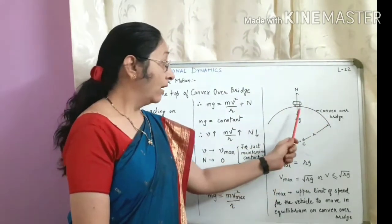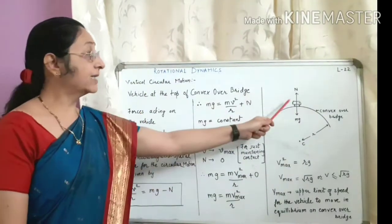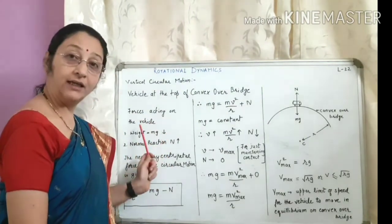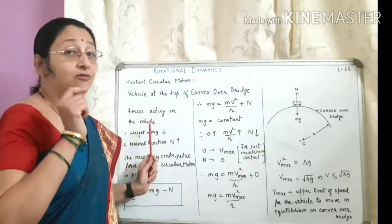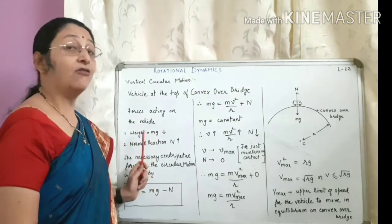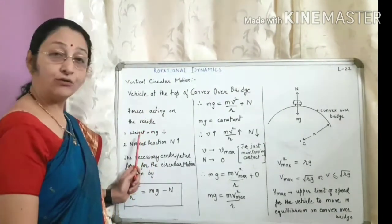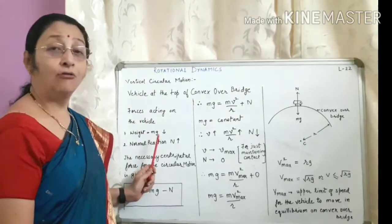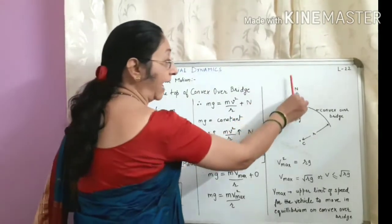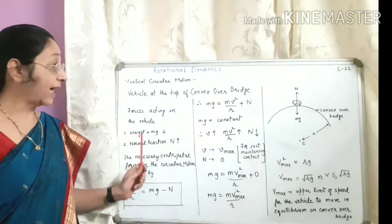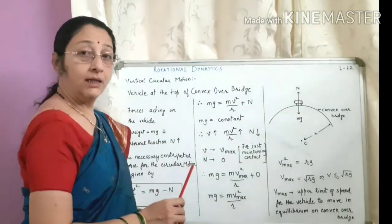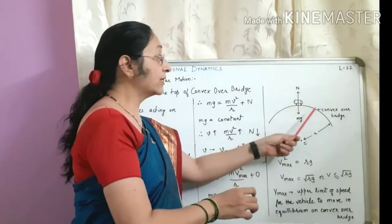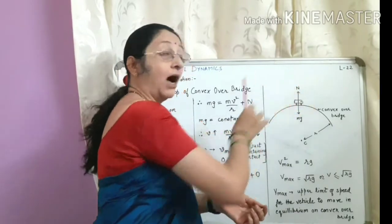Now, the forces at the highest point — the vehicle is at its highest point over the bridge. The first force acting is the weight of the body, that is mg (mass of the vehicle into g, acceleration due to gravity), which always acts in the downward direction. The next force acting on the vehicle is the normal reaction, which is exerted in the upward direction since the vehicle is in contact with the road surface.